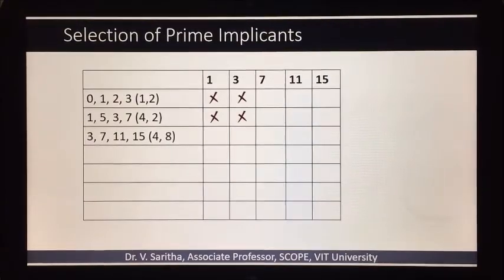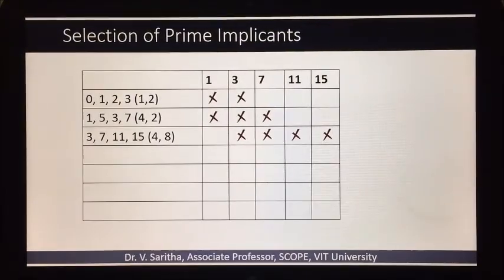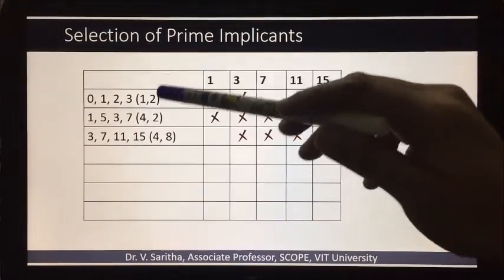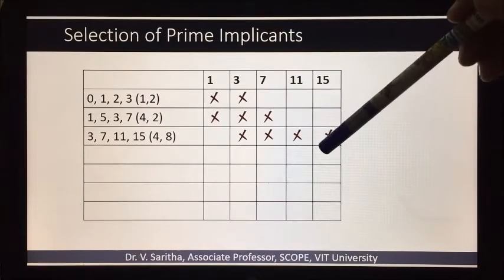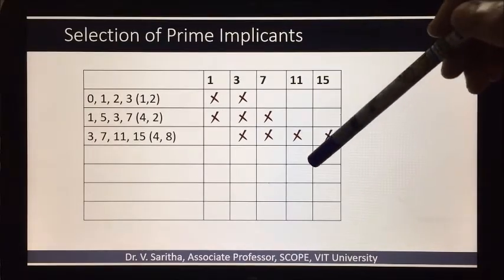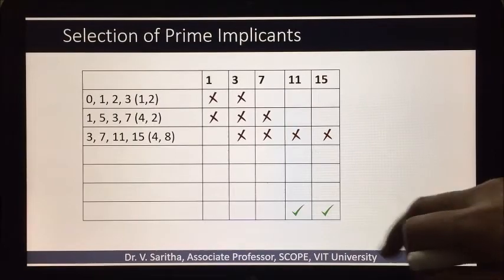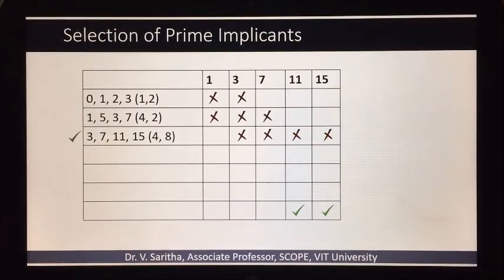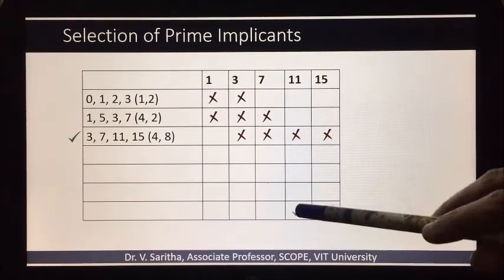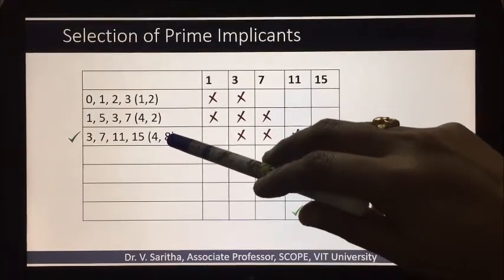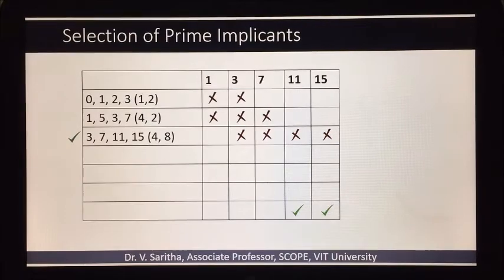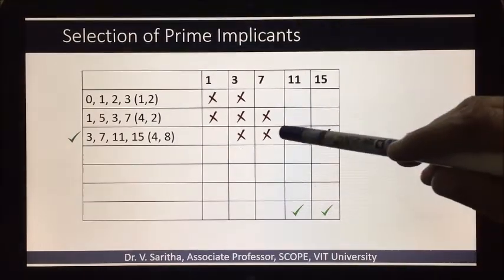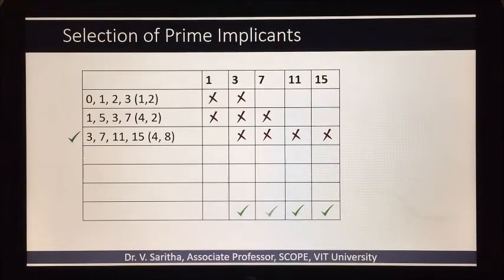As usual, let us cross all the terms given in the determined prime implicants. Then if we observe the columns, we are having only a single cross in 11 and 15, so we will take 11 and 15. Because 11 and 15 are checked, this prime implicant will be selected as an essential prime implicant, and in this prime implicant, besides 11 and 15, we are having 3 and 7 also, so check 3 and 7 as well.